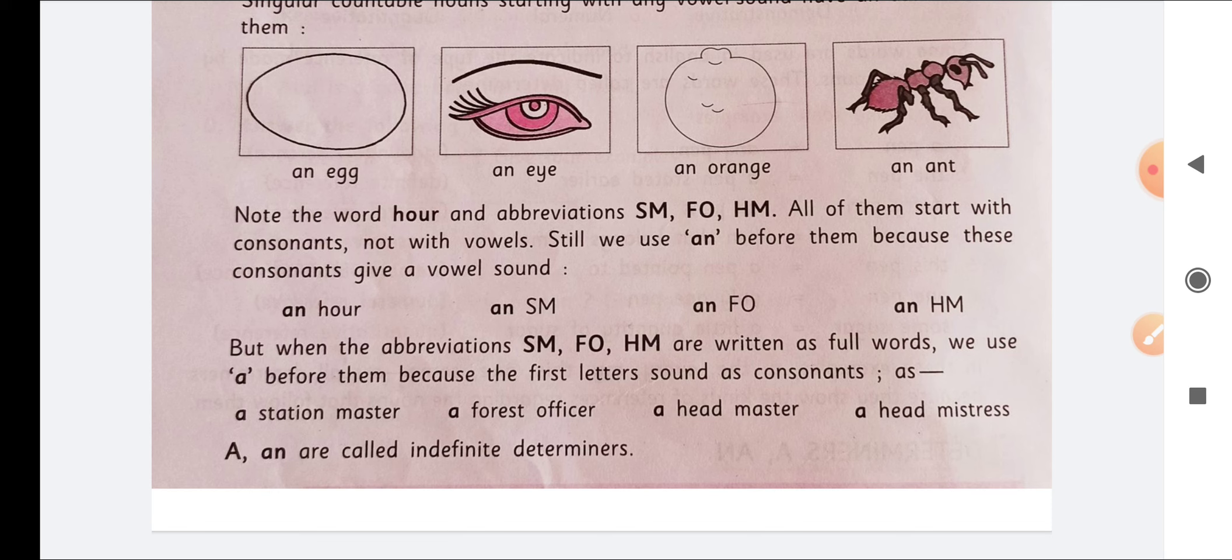Now but when the abbreviation SM, FO, HM are written as full words, we use a before them because the first letter sounds as consonants. As a station master, a forest officer, a headmaster, a headmistress. So a and an are called indefinite determiners.